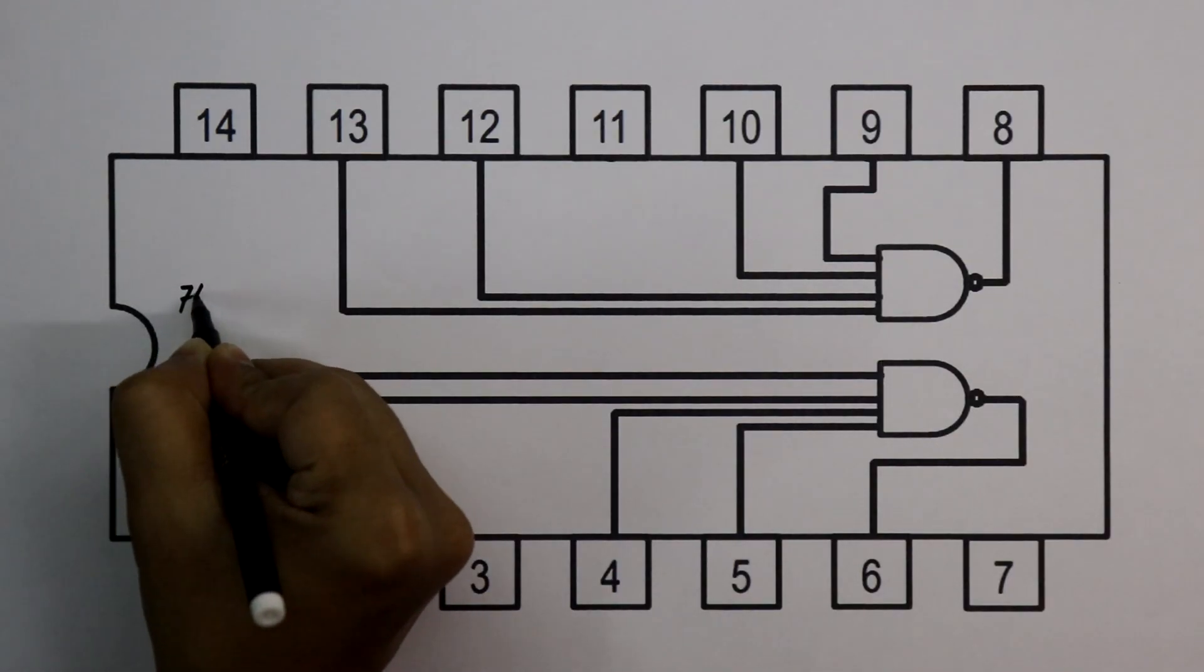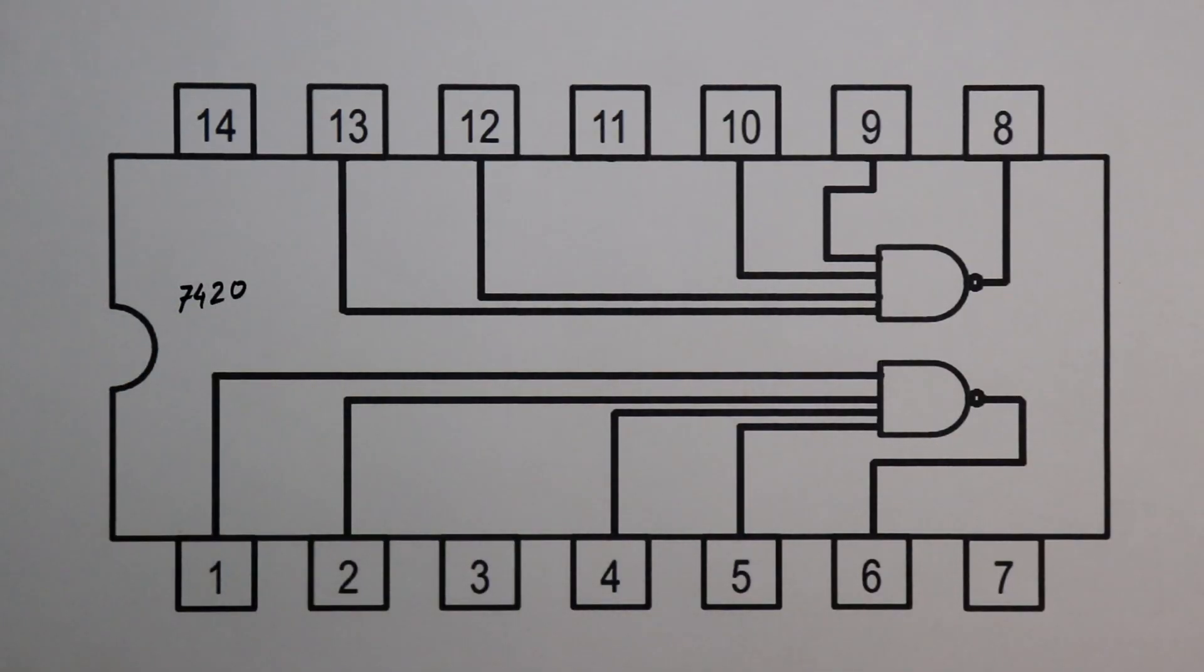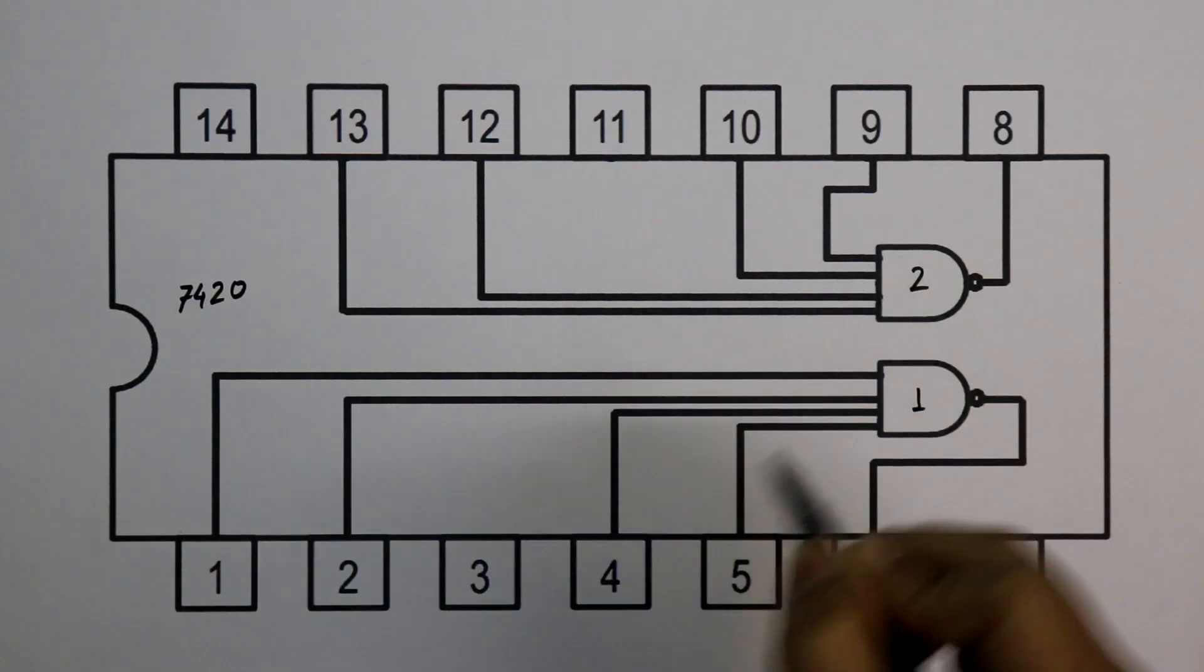IC 7420. It is 4 input NAND gate IC. It has 2 NAND gates, gate 1 and gate 2.